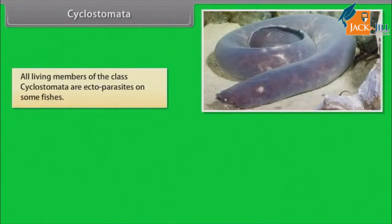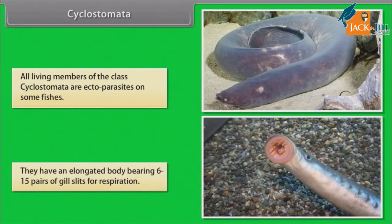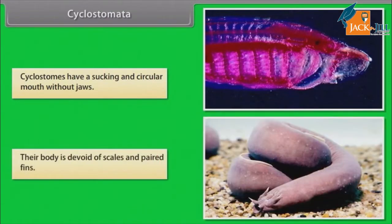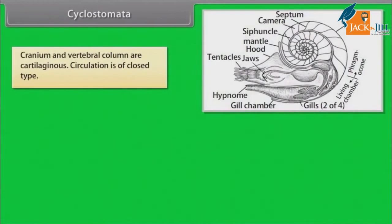All living members of the class Cyclostomata are ectoparasites on some fishes. They have an elongated body bearing six to fifteen pairs of gill slits for respiration. Cyclostomes have a sucking and circular mouth without jaws. Their body is devoid of scales and paired fins.